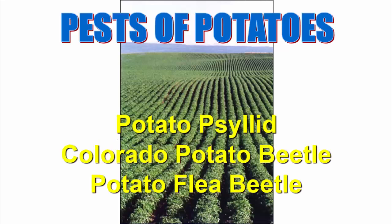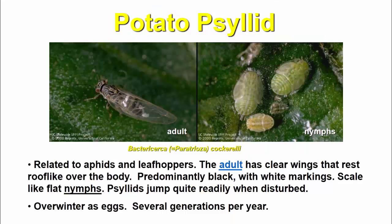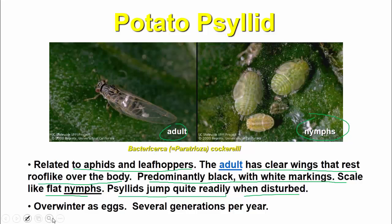Now, pests of potato: potato psyllids, Colorado potato beetles, and potato flea beetles. For potato psyllids, adults and nymphs are shown. They are related to aphids and leafhoppers. Adults have clear wings that rest roof-like over the body, predominantly black with white markings, and scale-like flat nymphs. Psyllids jump quite readily when disturbed. They overwinter as eggs, with several generations per year.